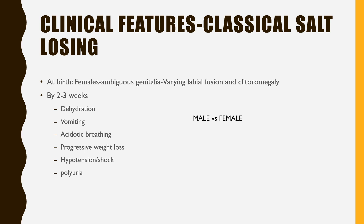At birth, females will have ambiguous genitalia — varying levels of labia majora fusion and clitoromegaly. This clitoromegaly can be so large it is confused for a penis, and the urethra just above the vaginal opening can be confused for a penis with hypospadias. By 2 to 3 weeks, both male and female can present with dehydration, vomiting, acidotic breathing, progressive weight loss, polyuria, hypotension, and shock. Males are at risk of going undetected at birth without newborn screening.